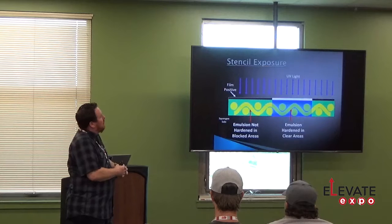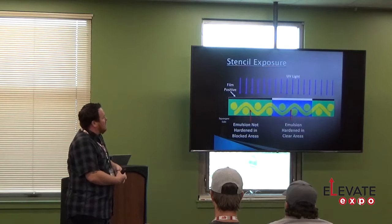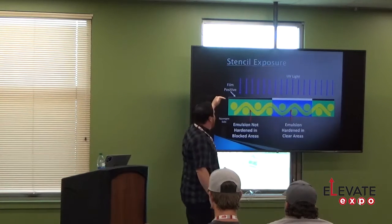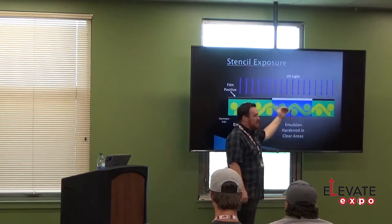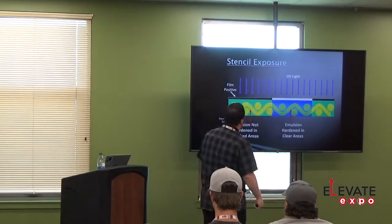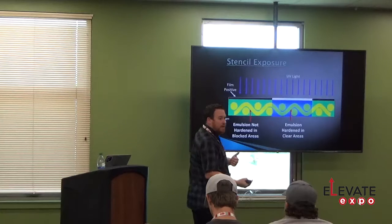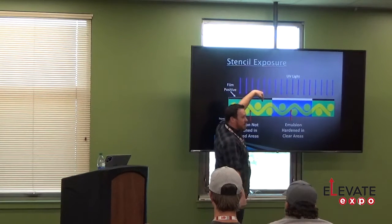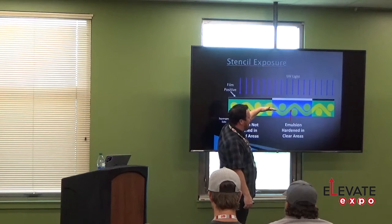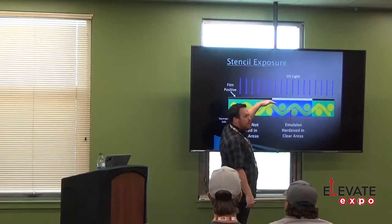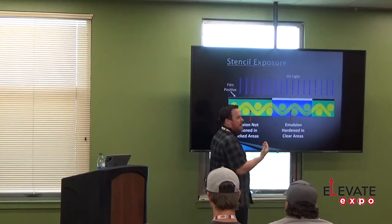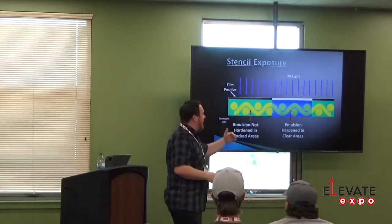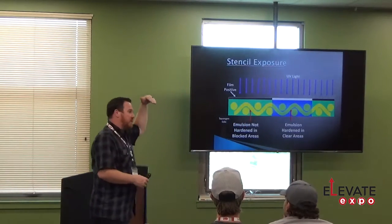During exposure, the film positive's black areas block light while clear areas allow UV through, hardening the emulsion. Emulsion exposes linearly from the light source side through to the back. If you feel the back side of your screen and it feels slimy or color comes off on your hand, that tells you the screen is underexposed — the light hasn't had enough time to pass all the way through.